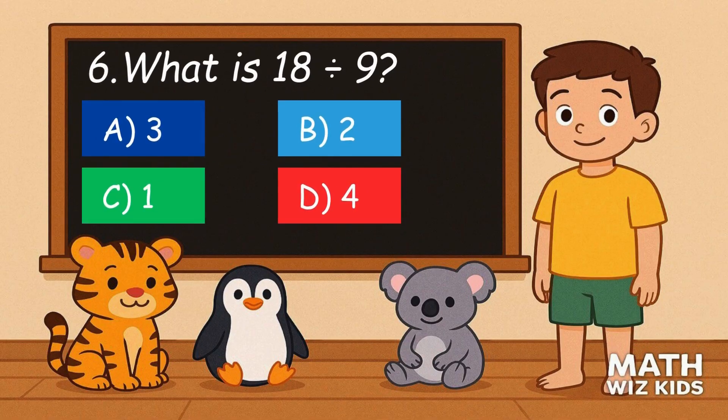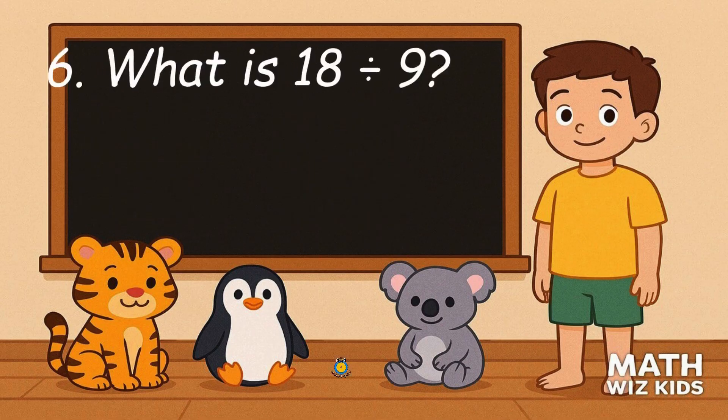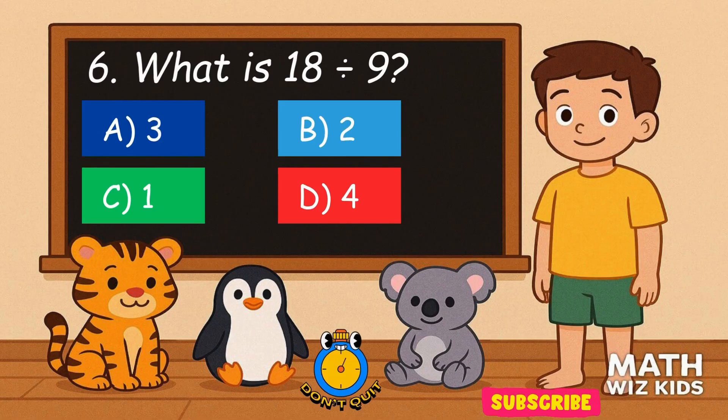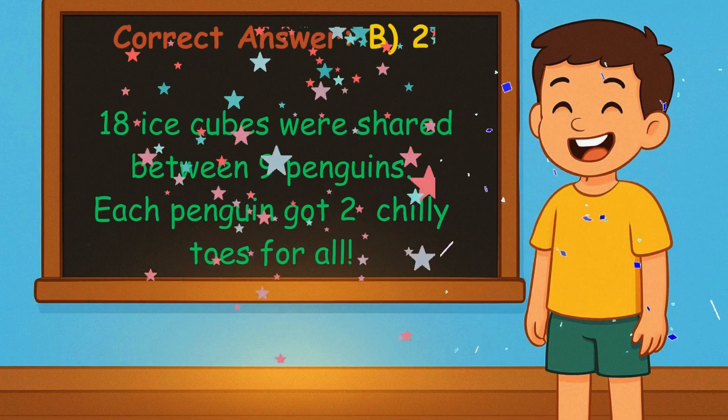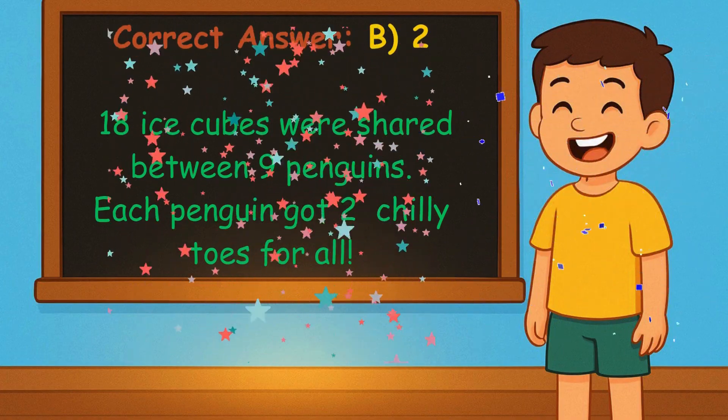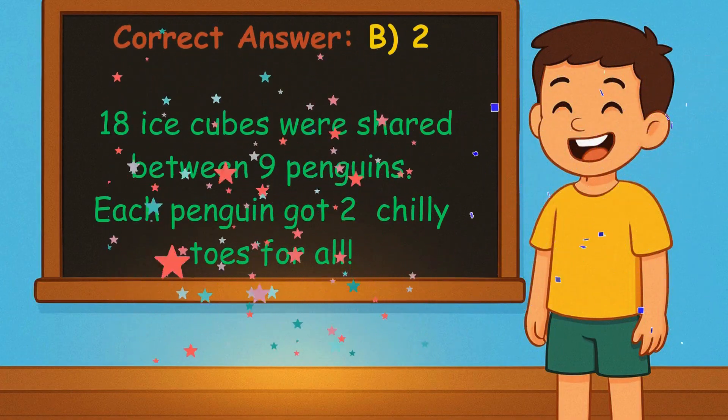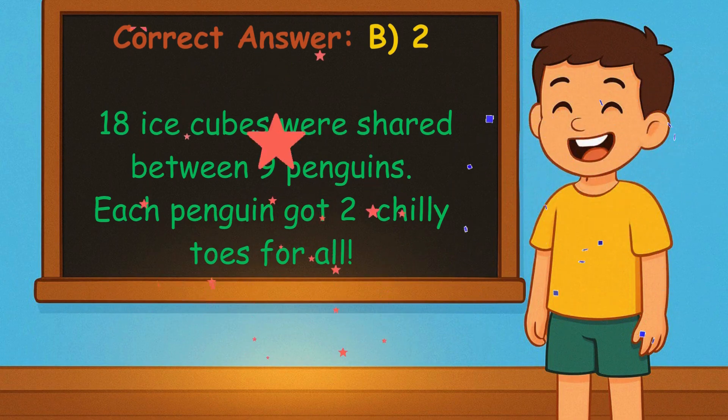6. What is 18 divided by 9? Is it A, 3, B, 2, C, 1, or D, 4? Correct answer is 2. Eighteen ice cubes were shared between 9 penguins. Each penguin got 2 chilly toes for all.